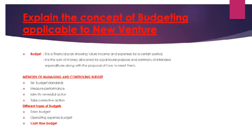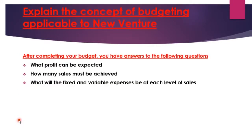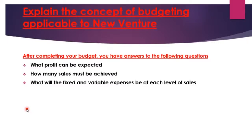We have different types of budgets: the sales budget, the operating expense budget, and the cash flow budget. Today we are only going to concentrate on the cash flow budget. After completing your budget, you should have answers to the following questions: what profit can be expected, how many sales can be achieved, and what will the fixed and variable expenses be at each level? This means you need to understand the different types of expenses.